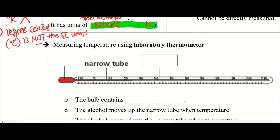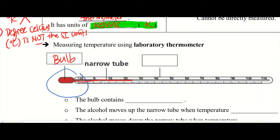This is what a thermometer looks like in the lab — very unlike the digital aural thermometer we're using. Let's learn the different parts of it. First, you have this part of the thermometer — this part is what we call the bulb, B-U-L-B. It's not a light bulb even though it's the same word. Then you have this part where you see the reading — this is where you read off the temperature. At the center, where you see a red color fluid coming from the bulb — the bulb contains some red color fluid — which moves up the narrow tube.